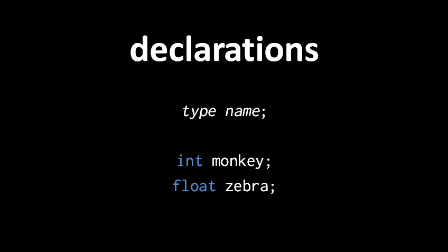So declaration is just a kind of statement of the form type, space, name, and then semicolon. So here we're declaring a variable of type int called monkey, and then we're declaring a variable of type float called zebra.